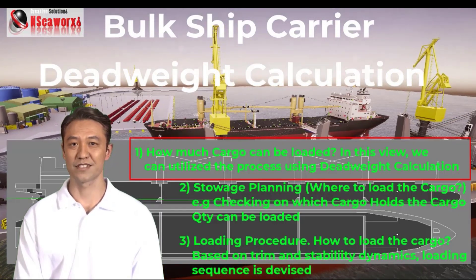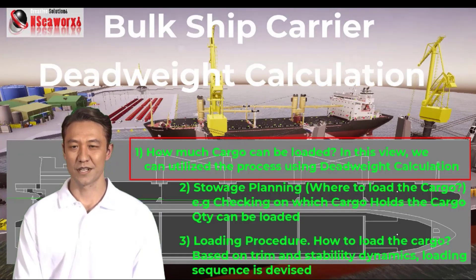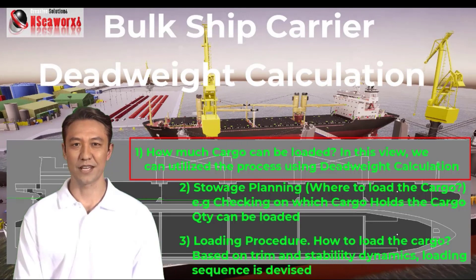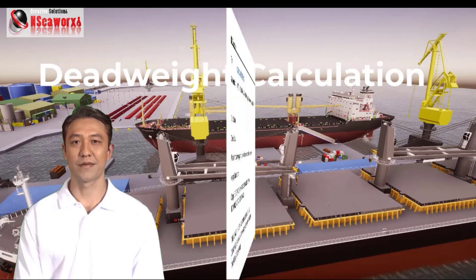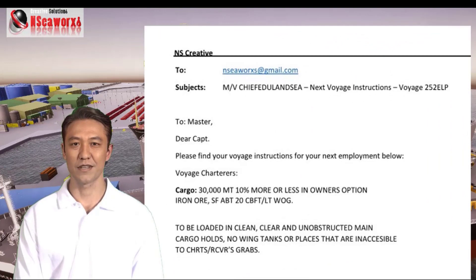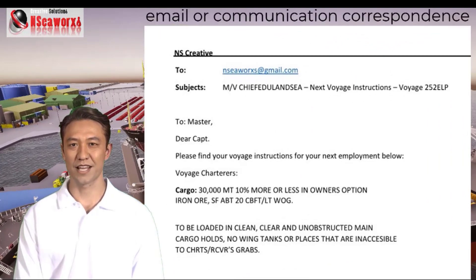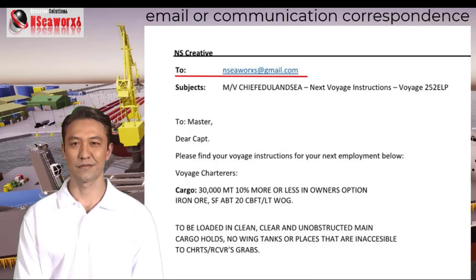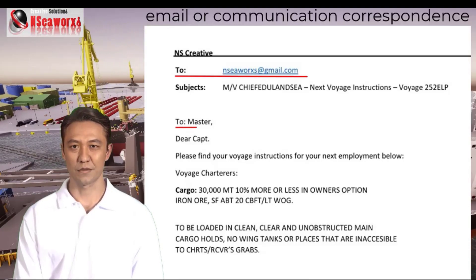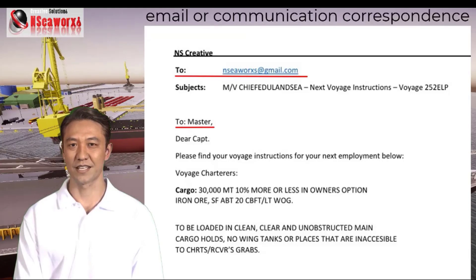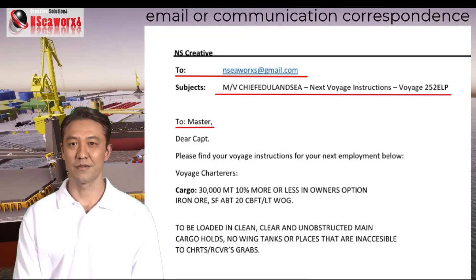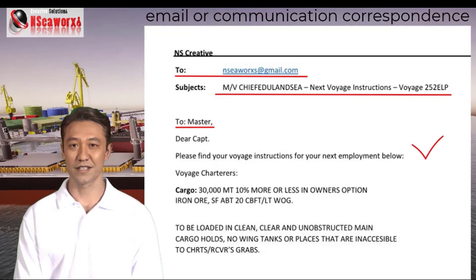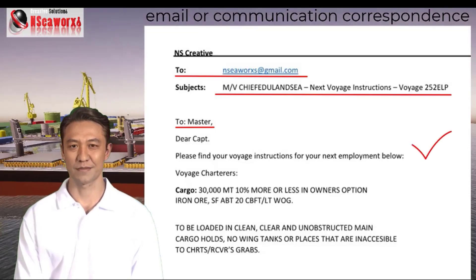This is where a vessel has received voyage loading instructions. Let me show you an example of a voyage loading instruction received by the ship. Let's go through the contents of the ship correspondence. As you can see here, we have an email from the ship's company or the operations department. We have the 'To' field and the subject. Because it's addressed to the captain, the subject says: MV Chief Eduland C — voyage instruction. To the master, dear captain, please find your voyage instructions for your next employment below.